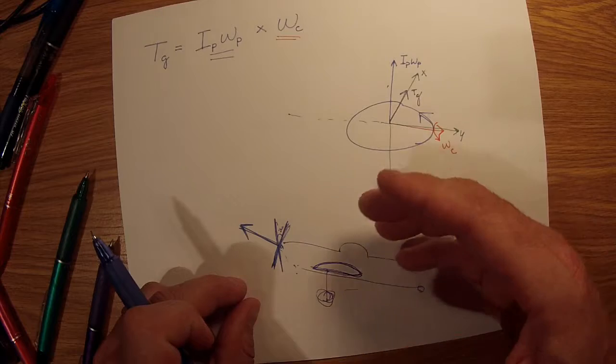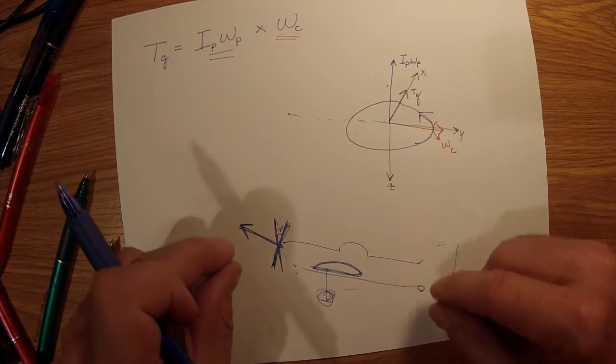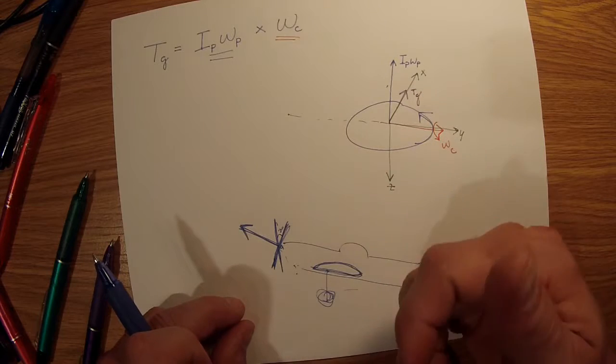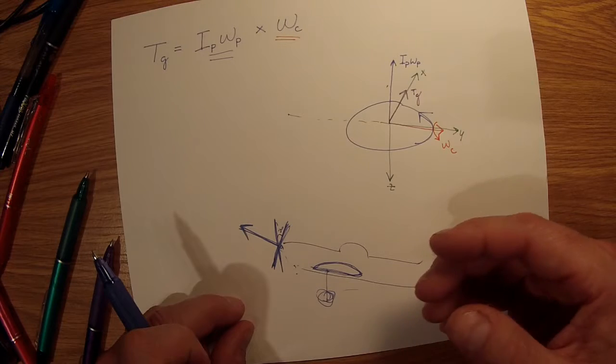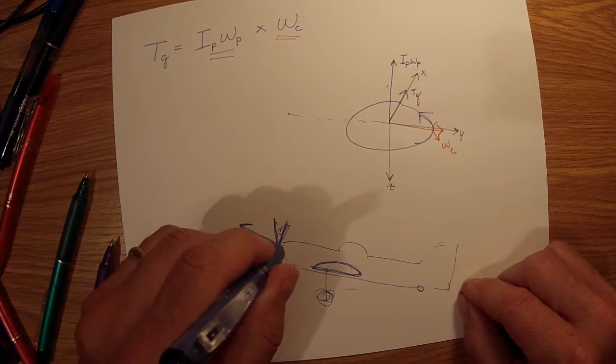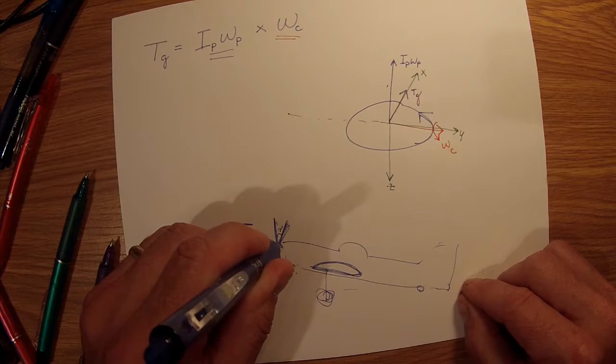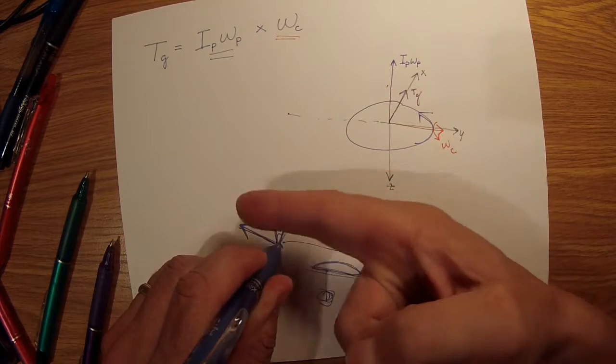What's going to happen is that's going to generate a torque. My signs may be wrong here in this sketch, but in any event, you know that this Omega C is occurring about an axis coming out of the plane of the paper, and we have an angular momentum vector going forward.